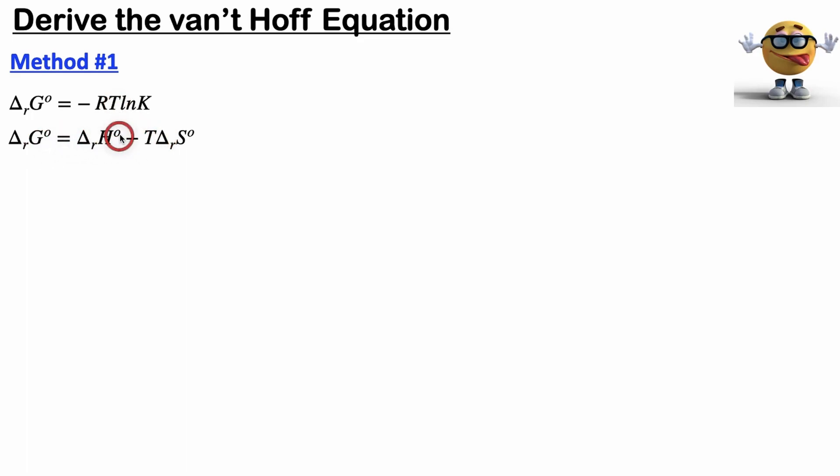And if you look at these two equations, they both equal delta G on the left-hand side, which means the right-hand sides have to be equal to each other. So if we make them equal to each other, we're left with this here. And I've labeled this equation one just for later when we're graphing.